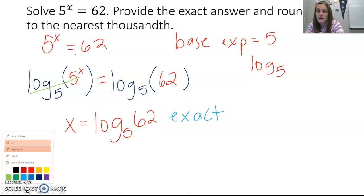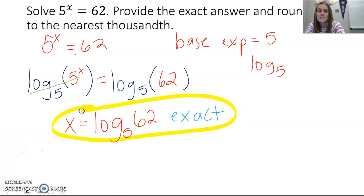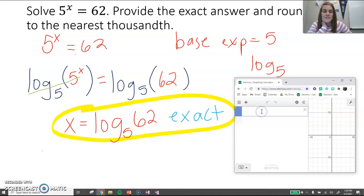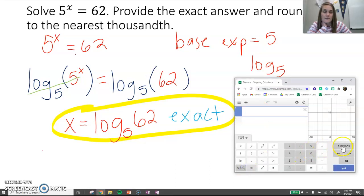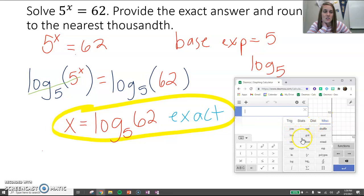So that's part of our problem. We're supposed to find out what's the exact answer, and then we're also supposed to round it to the nearest thousandth. So we're going to get out our calculator. So I have Desmos here. To do a logger, we click the keypad at the bottom, and then we click functions, and then miscellaneous.